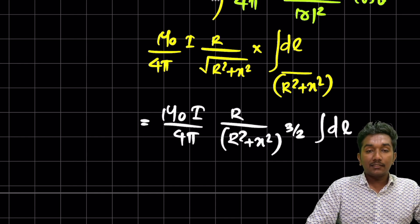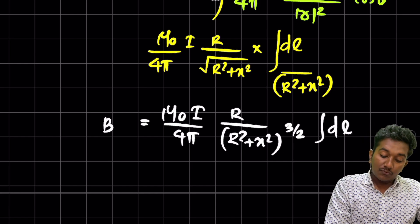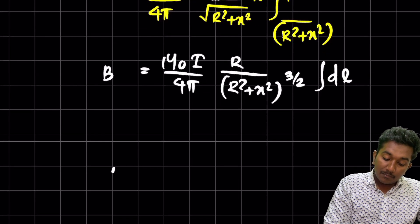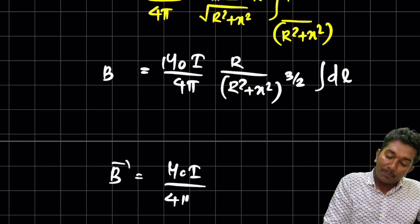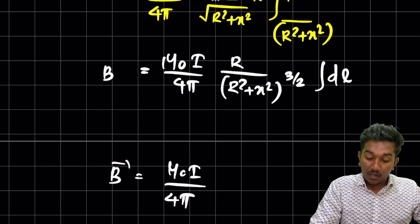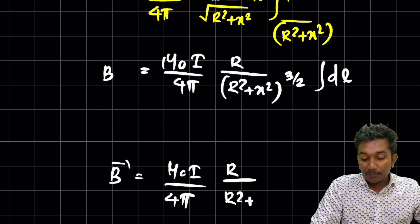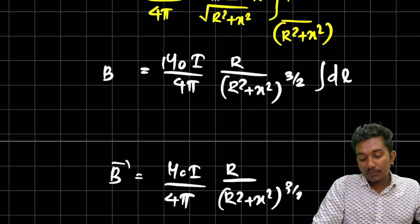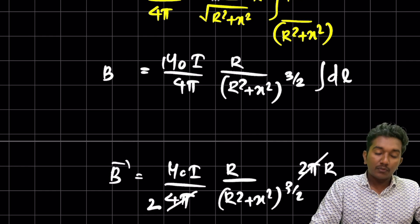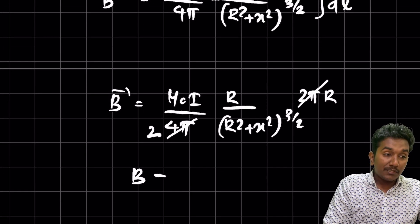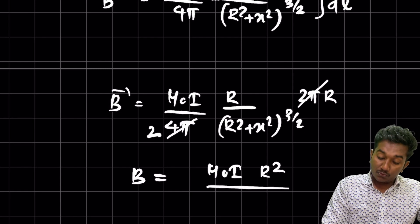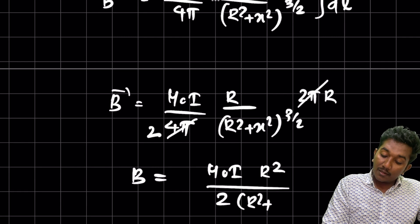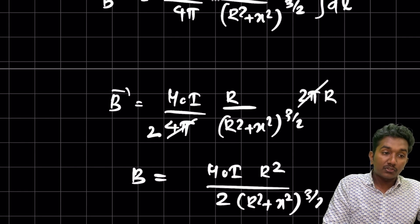The exponent combines: 1/2 from cosθ plus 1 from r² gives 3/2. So we have (R² + x²)^(3/2) in the denominator. Integrating dl over the full circle gives 2πR. So: B = (μ₀i/4π) × R/(R² + x²)^(3/2) × 2πR. The 4π and 2π simplify, leaving a factor of 2.